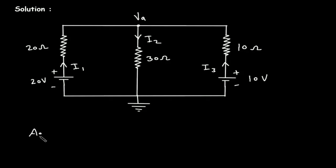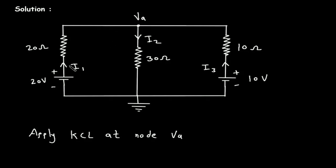Now, apply KCL — that is Kirchhoff's current law — at node VA. If we apply KCL, the summation of all entering currents equals the leaving current. I1 is the entering current to this node, and I3 is also the entering current. So I1 plus I3 is equal to the leaving current, which is I2.